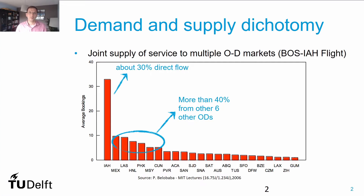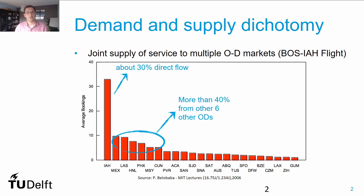In a given flight, it's very common, especially for hub-and-spoke carriers, to have passengers flying on that flight who are not necessarily flying only between the origin and destination airports of the flight. In this particular case, analyzing a flight between Boston and Houston, only 30% of the flow has destination in Houston, and there are more than 40% of passengers that have other destinations referring to other OD pairs. For instance, about 10% of passengers are flying to Mexico City, while 90% are flying to Los Angeles, and a given number of passengers are flying to Honolulu and Phoenix.